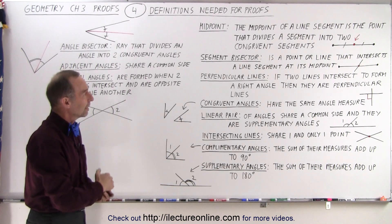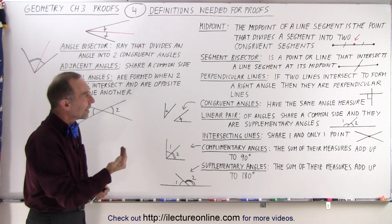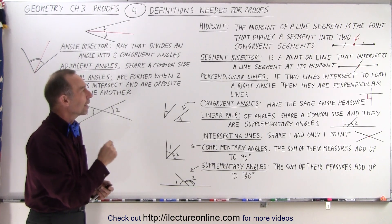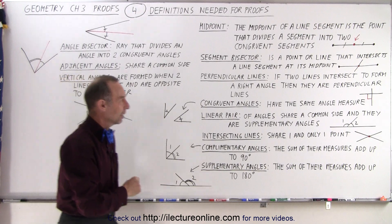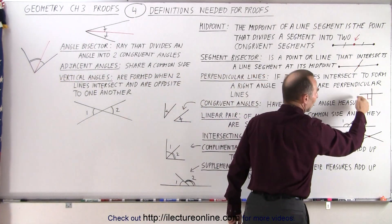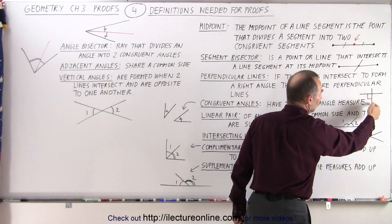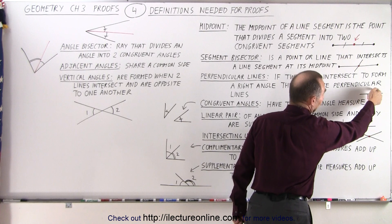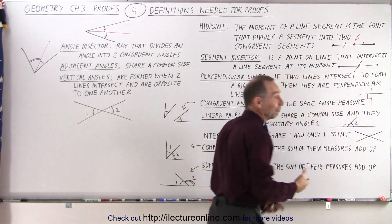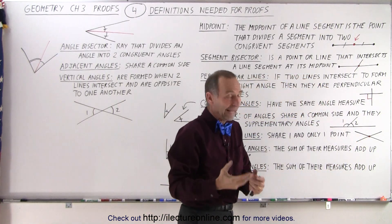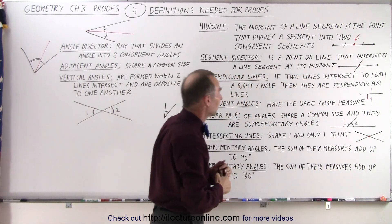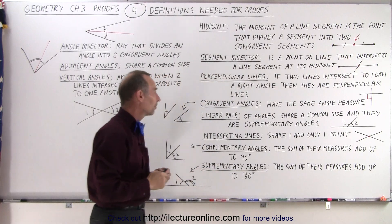Perpendicular lines: if two lines intersect to form a right angle, then they are perpendicular lines. Here we have two lines, they intersect one another and they form actually four 90-degree angles, so therefore they must be perpendicular lines.